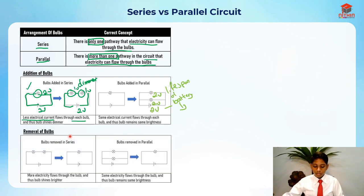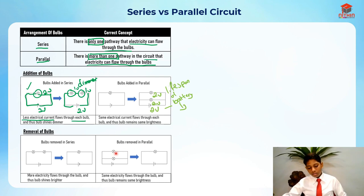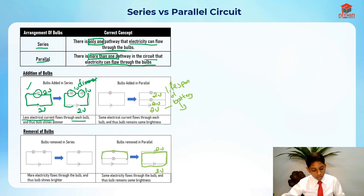For the removal of bulbs: in a series circuit, removing one bulb means more electricity flows through the remaining bulb and it shines brighter — the exact opposite of adding bulbs. For the parallel circuit, since the bulbs were already at the same brightness, removing one bulb still leaves the remaining bulb at the same brightness because we're just removing one pathway.